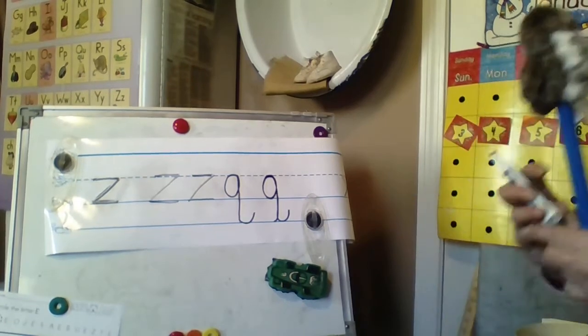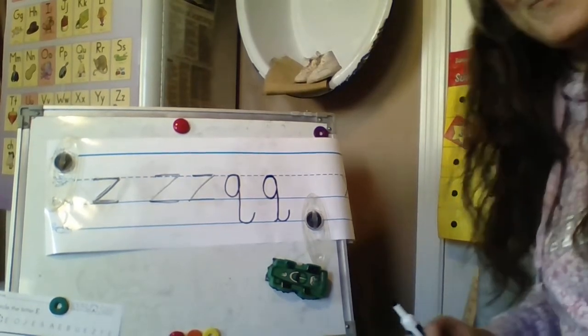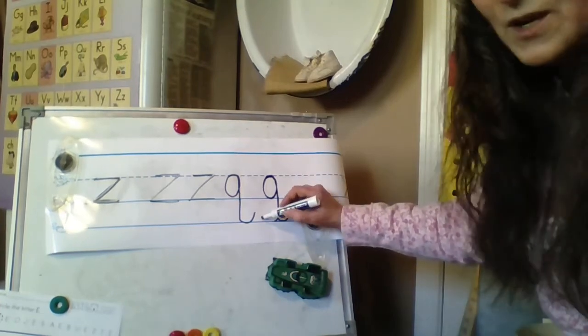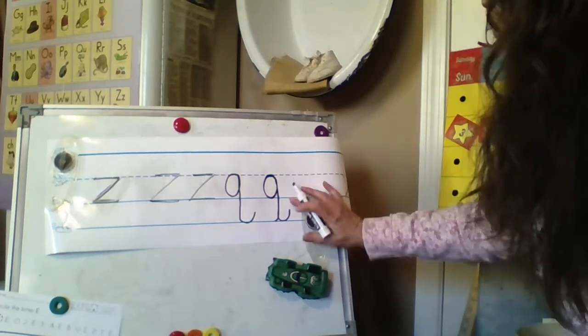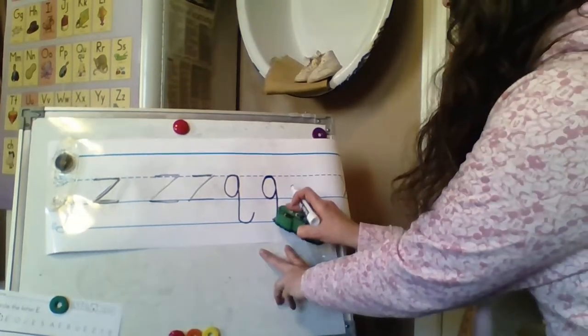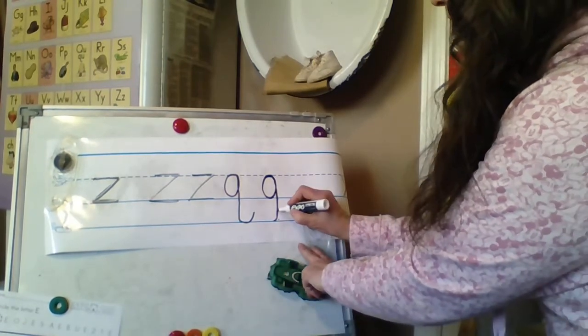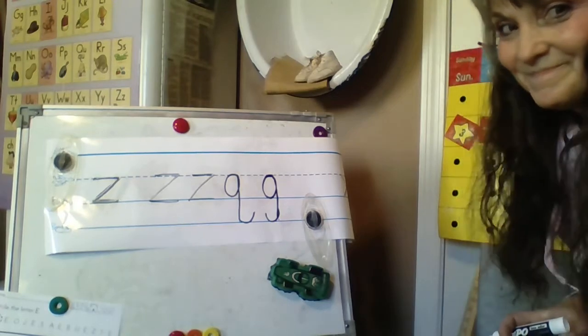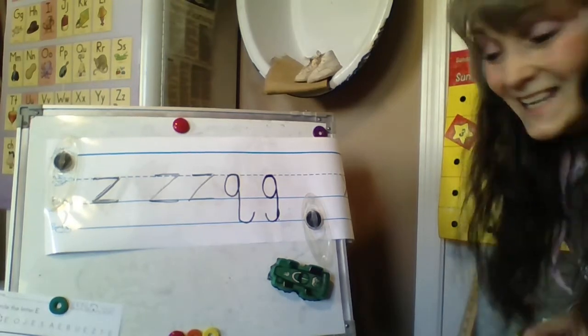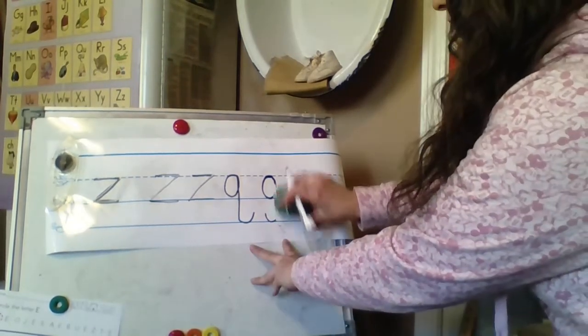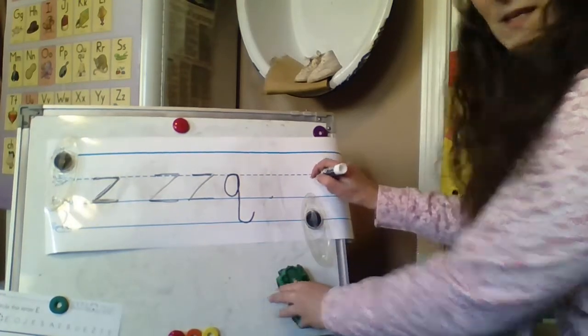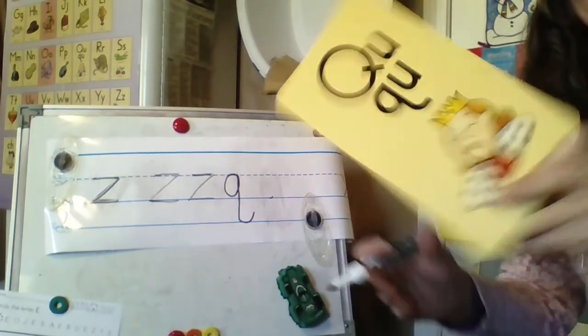So let's do it again. Q is a plain line round letter. Q is a plain line round letter. Point to the plain line. To the plain line. Go back on the plain line and around. Go back on the plain line and around. Up to the plain line. Up to the plain line. Trace down. See how it looks like an A?